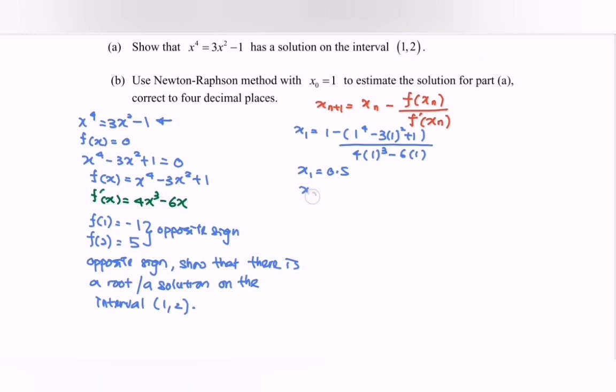Repeat the calculation: x₂ equals 0.5 minus [0.5 to the power of 4 minus 3(0.5) squared plus 1] over [4(0.5) cubed minus 6(0.5)]. So x₂ equals 0.625.